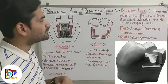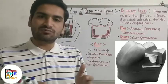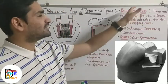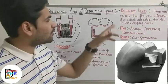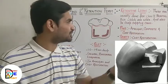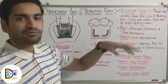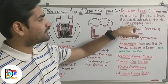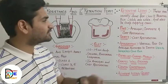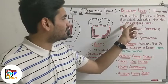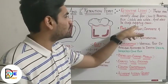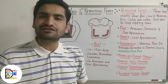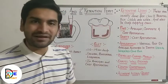Retentive locks are used for class 2 proximal boxes that are wide — cases where more tooth structure is involved and the proximal box is wider than conventional. You can provide retentive locks on the proximal box of the preparation. They are also used in cusp capping cases, where you are capping a single cusp and need additional retention because there is less tooth structure available.